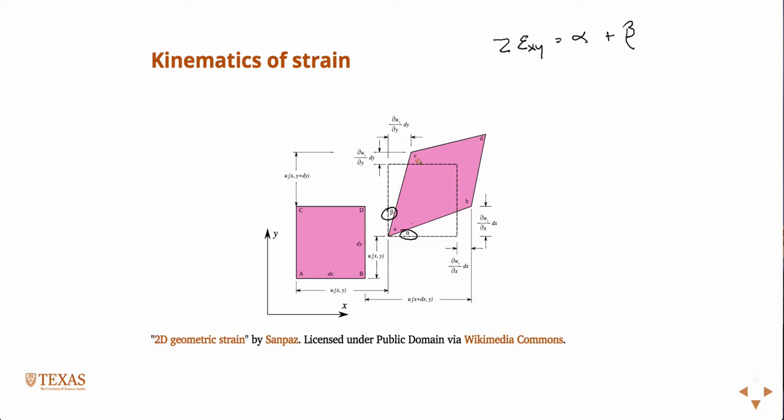So then from the figure, we can write down what the angle alpha is. Again, alpha is just the tangent of opposite over adjacent. So if we want to figure out what the angle is, it's tangent of the opposite over the adjacent. And so the opposite is this distance here, which is labeled. It's this distance here. So it's partial u_y partial x dx over adjacent.